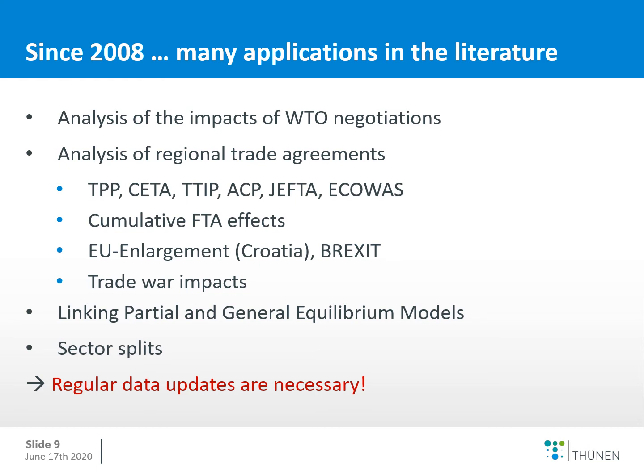Since 2008, many applications can be found in the literature. TASTE was initially used to analyze the impacts of WTO negotiations, but now it is mainly used for regional trade agreements. Studies include analyses of TPP, CETA, TTIP, the African ACP agreement, the Japan-EU agreement, and the ECOWAS agreement. There are also studies on cumulative effects of free trade agreements, EU enlargement with Croatia, Brexit scenarios, implications of trade wars, partial and general equilibrium model linkages, and sector splits.